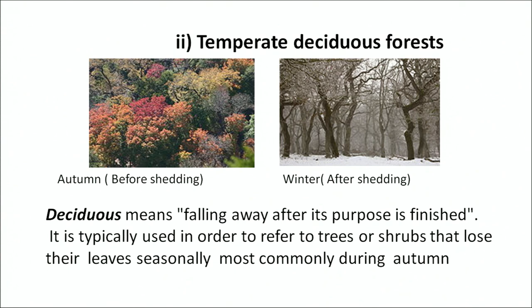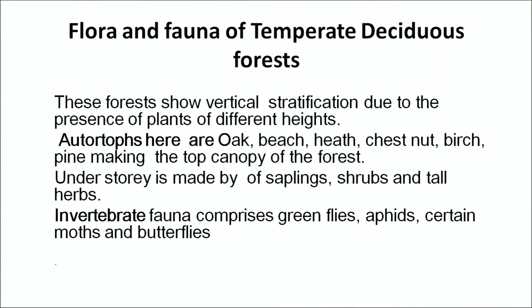The word 'deciduous' is derived from 'falling away after the purpose is finished.' It is typically used to refer to trees or shrubs that lose their leaves seasonally, most commonly during the autumn season. As you can see in this figure, on one side it is in full bloom and on the other side the leaves are shed by the plants. These forests show vertical stratification due to the presence of plants of different heights. Autotrophs of these forests are oak, beech, heath, chestnut, birch, and pine, making the top canopy of the forest.